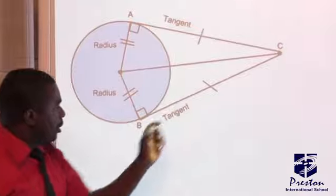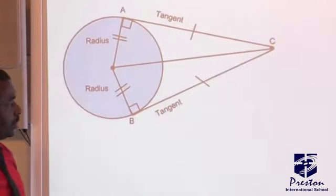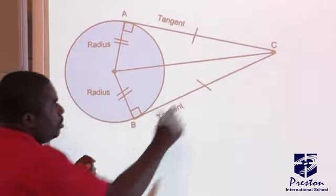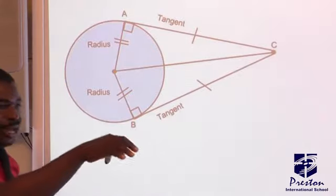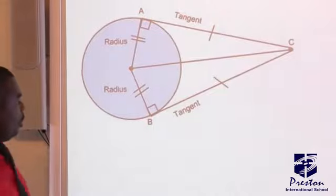BC is a tangent. AC is also a tangent. The theorem now says if the two tangents meet at a point outside the circle, it means the two tangents are equal in length.